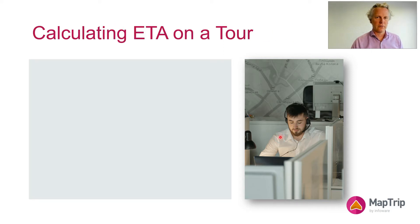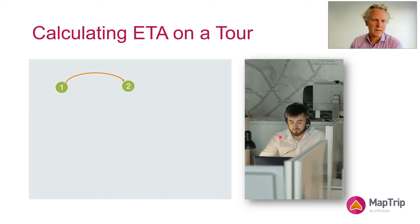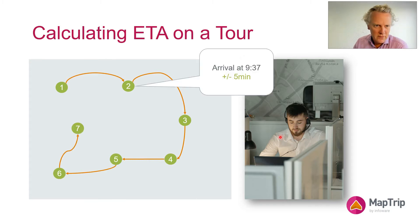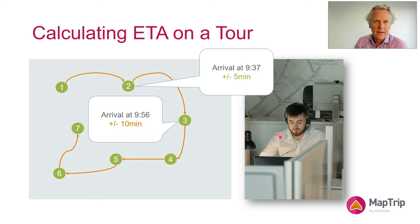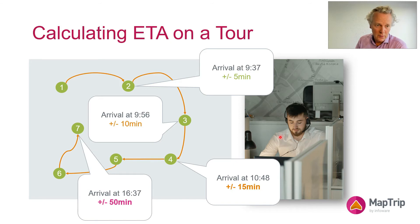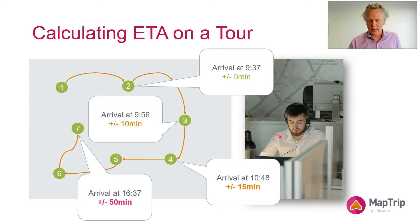If you are a professional driver, you're not just going to one destination. You're going to multiple destinations throughout the day — like in this case, seven different destinations. And if you have an error in each of the route calculations of say five minutes, that can add up during the day. While ten minutes may still be tolerable, it adds up, and therefore a precise ETA calculation is very important.